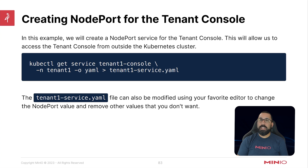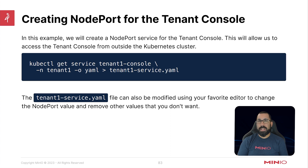Now we need to be able to access the tenant deployment. Some things get created by default for internal services to access it. You could do port forwarding as discussed previously in the operator video, and you can check the documentation as well. But instead of port forwarding, we're going to create a node port service because that gives more persistent access. In production, you would likely configure a DNS name and TLS certificates so end users don't have to use high-numbered ports, but rather just go to a DNS name to access their particular tenant.